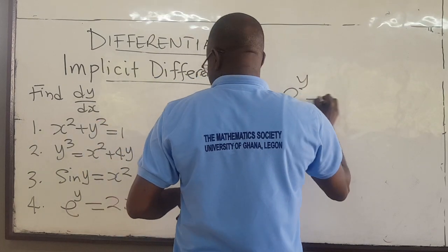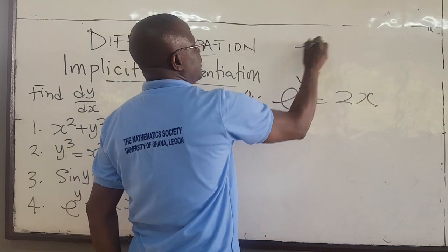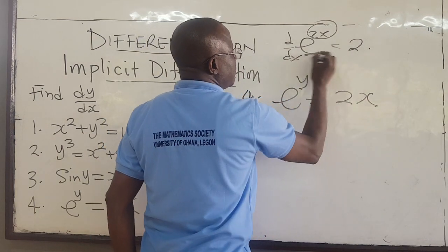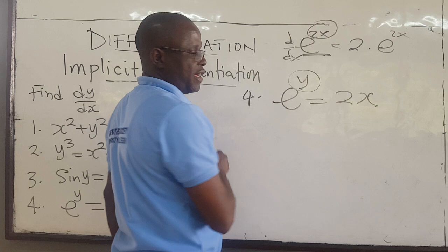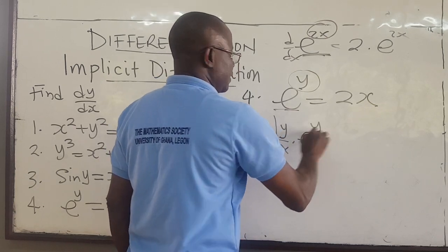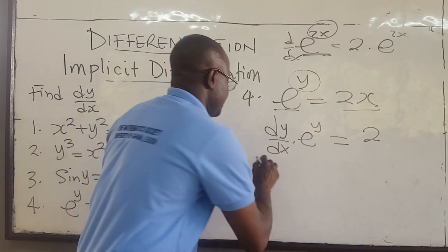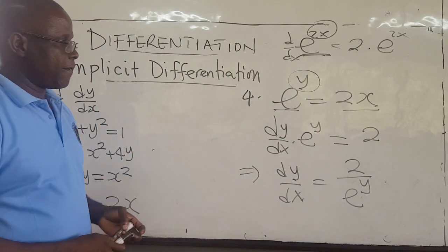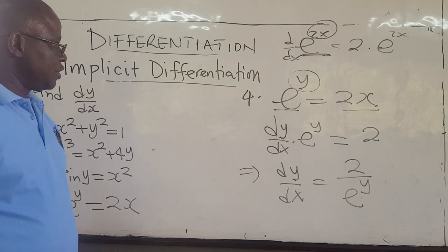Example 4: e to the y equals 2x. This is very similar to what was discussed in the previous lecture. To find the derivative of e to the y, you find the derivative of y, which is dy/dx, and multiply by the whole function e to the y — by the chain rule. That equals the derivative of 2x, which is 2. So dy/dx times e to the y equals 2, and dividing through by e to the y gives dy/dx equals 2 over e to the y. That would be the derivative of this expression, and we are done with implicit differentiation.